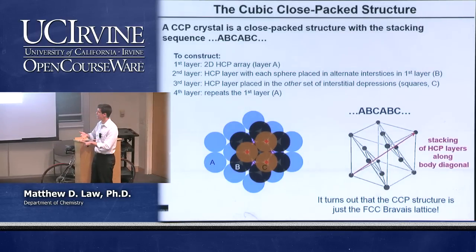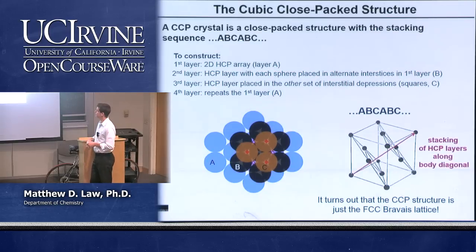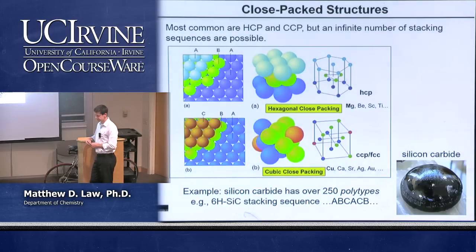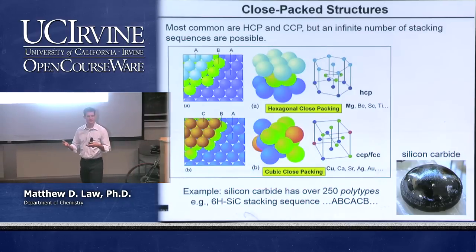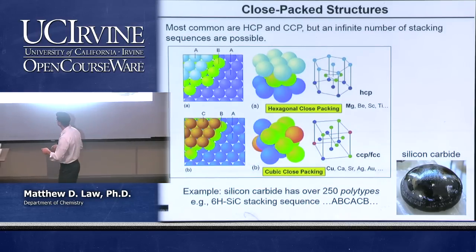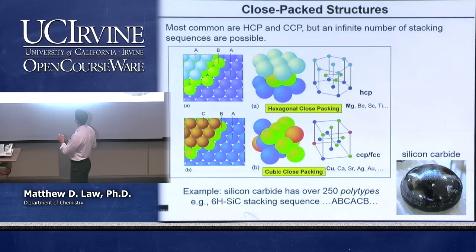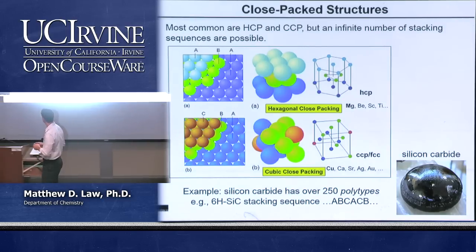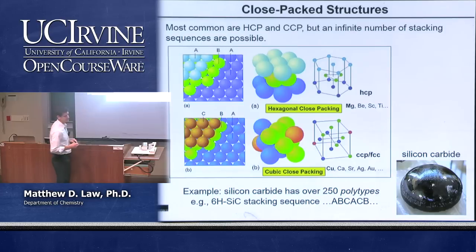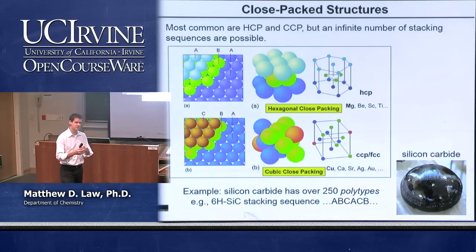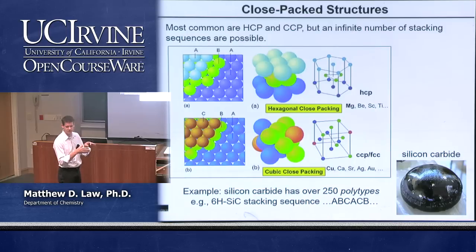CCP/FCC already has a known packing fraction of 74% and coordination number of 12. Here's a comparison of HCP and CCP/FCC with color-coding to help visualize the layer stacking sequences. HCP corresponds to ABA stacking, and CCP corresponds to ABC stacking. The atoms inscribed in the unit cell match the layer colorations shown.